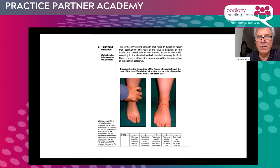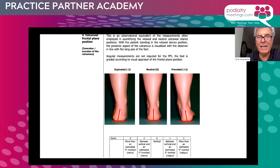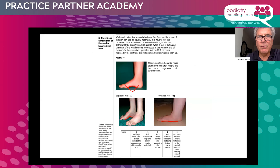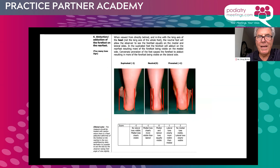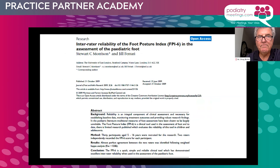The Foot Posture Index is a six-factor evaluation of various alignment features of the foot in static stance. The steps include: palpating the talar head; looking at the curvature above and below the lateral malleolus; looking at the calcaneal frontal plane position; looking at bulging and prominence of the talonavicular joint; looking at the congruence or height of the medial longitudinal arch; and looking at adduction or abduction of the forefoot on the rear foot in the transverse plane. A scoring system of minus two to plus two is used for each factor, and combined scores classify the foot as neutral, pronated, or supinated.